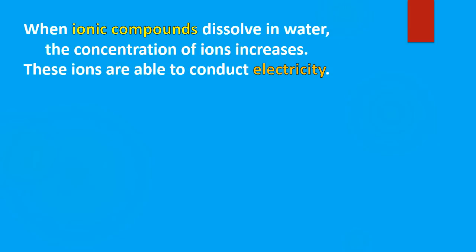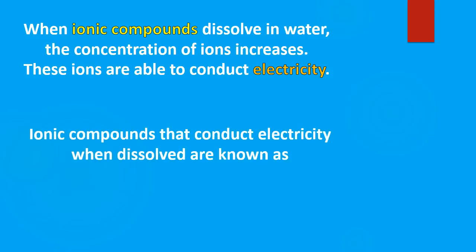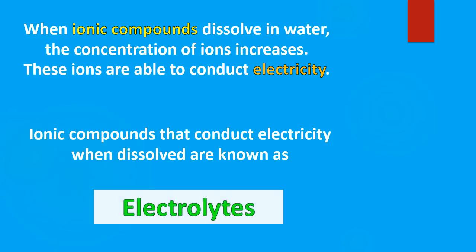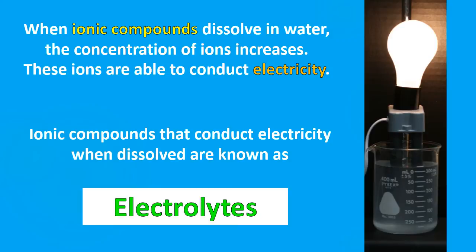When ionic compounds dissolve in water, they break apart into their ions — they dissociate. When they form ions, these ions include negatively charged species. Once you increase the amount of ions in the substance, these ions are able to conduct electricity. Ionic compounds that conduct electricity when dissolved in water are known as electrolytes. When we add table salt to water, the bulb lights because it contains dissolved ions — charged particles that allow the flow of electricity.